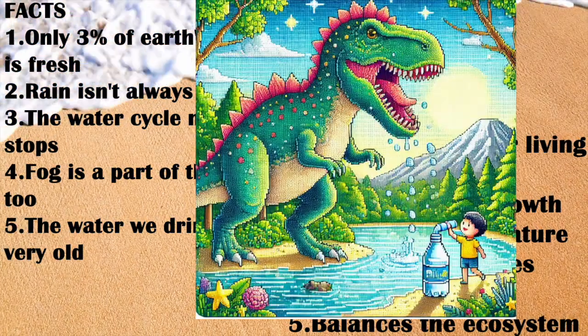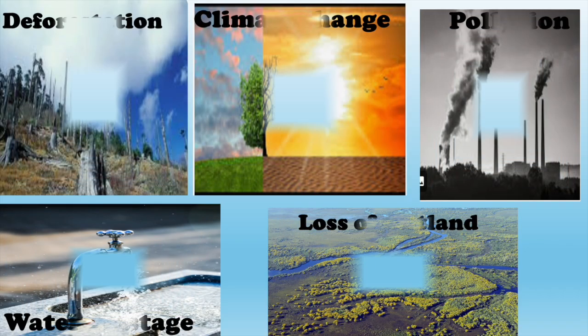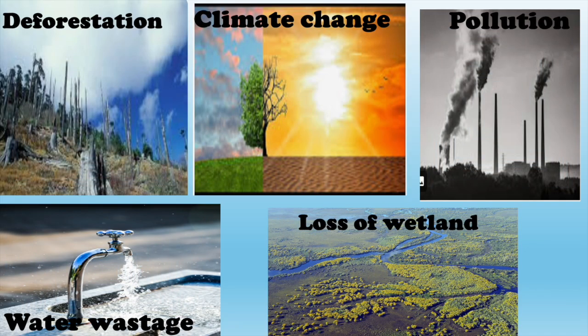Do you know the factors that affect the water cycle negatively? Deforestation — cutting down trees — reduces transpiration, leading to less moisture in the air and lower rainfall. Climate change causes rising temperatures, increasing evaporation rates and leading to extreme weather like droughts and floods. Warmer climates can reduce snowfall, affecting water storage in glaciers. Overuse of water resources — such as excessive pumping of groundwater — lowers water levels and disturbs the flow of water in the cycle.